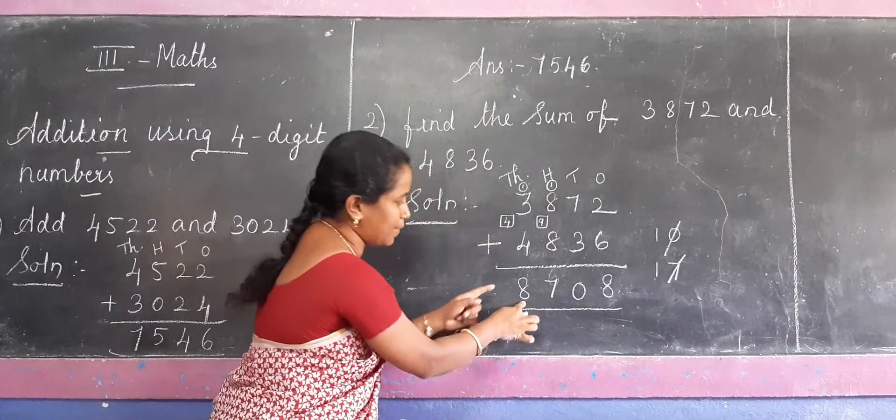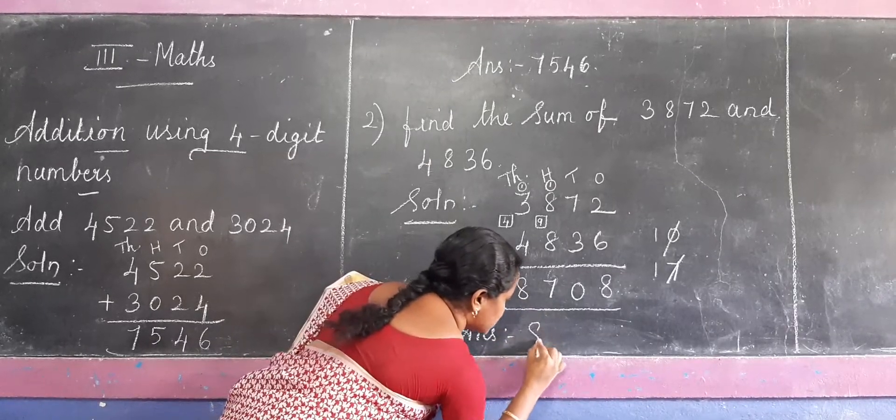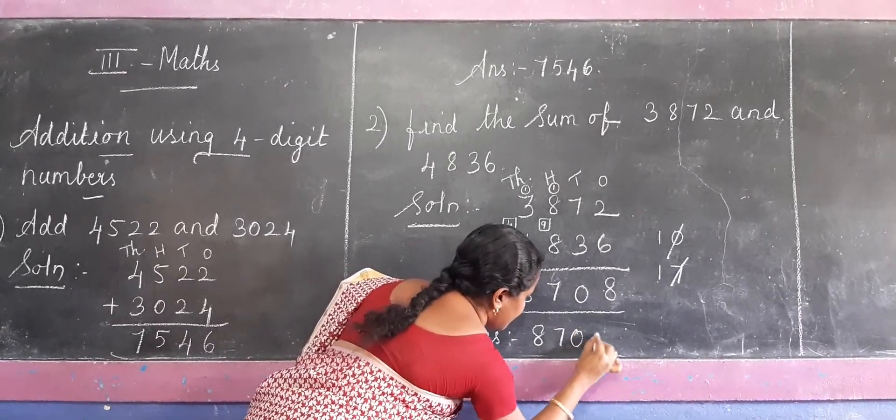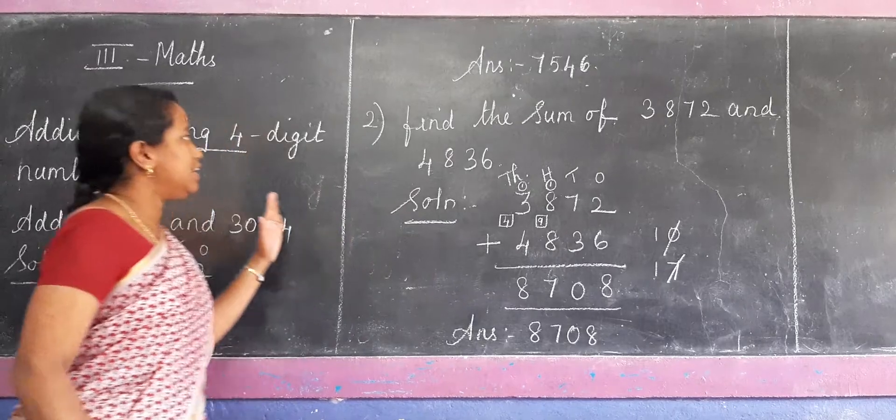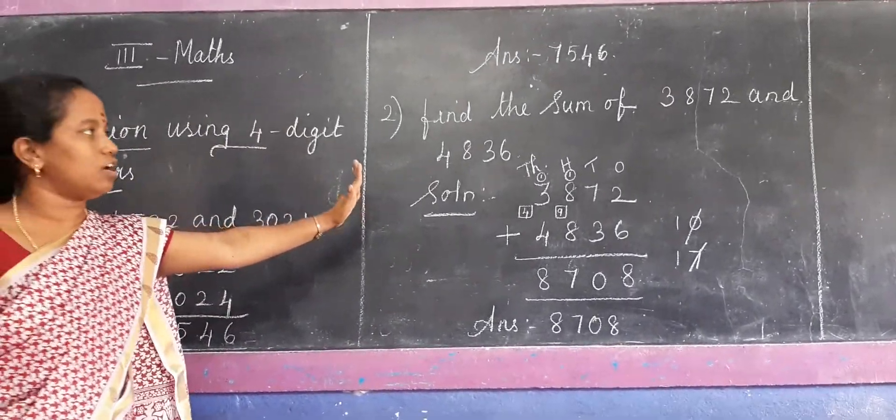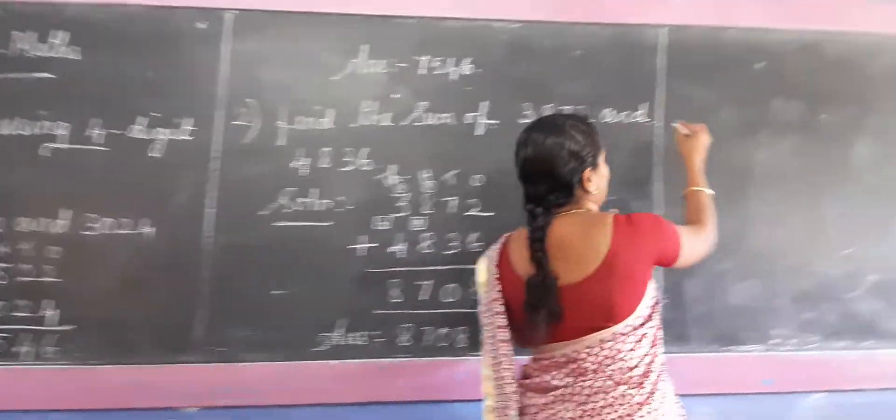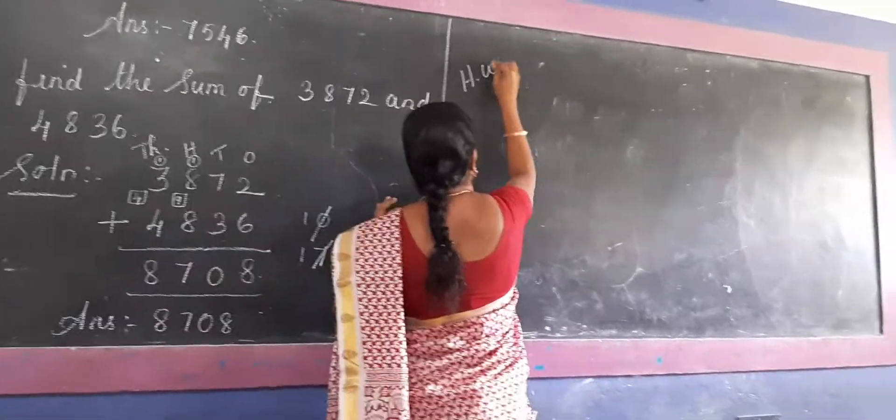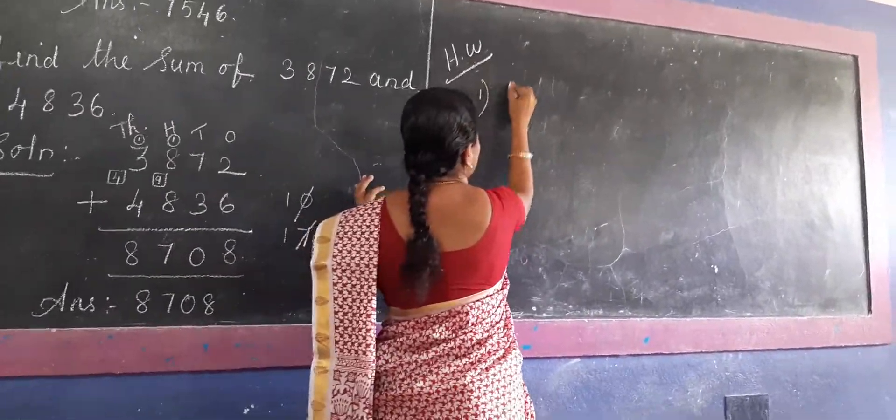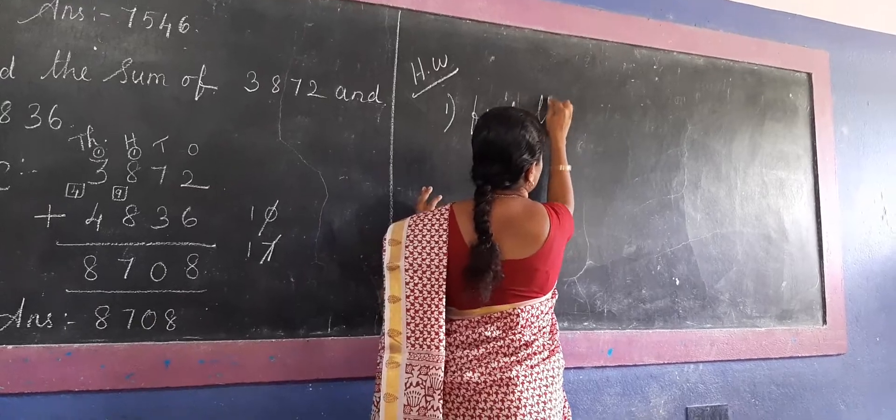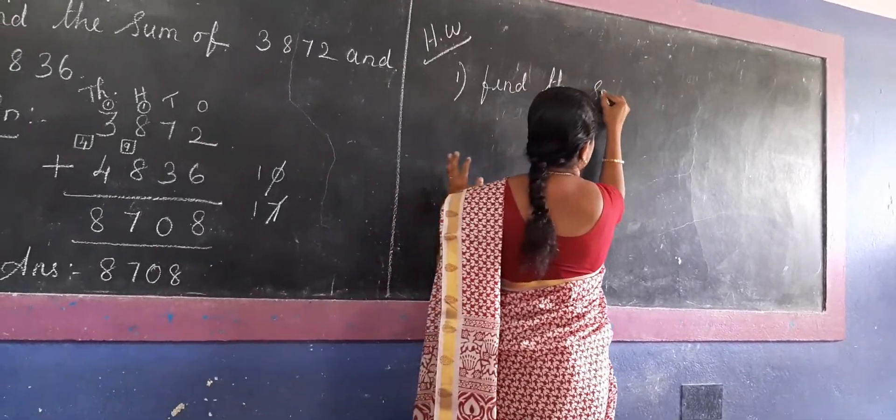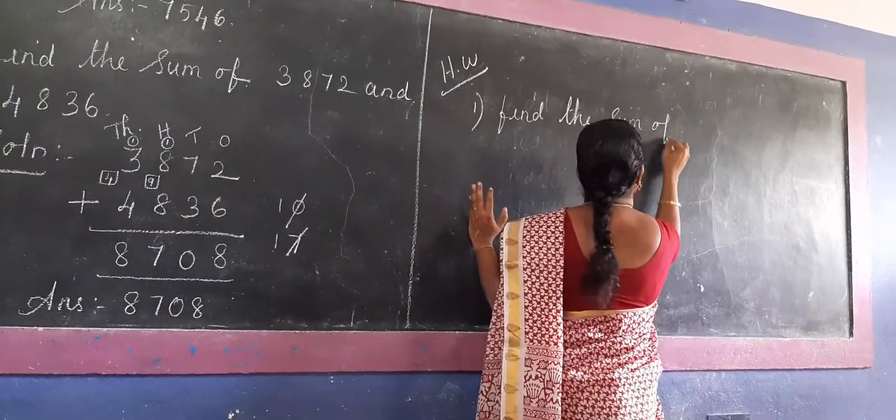So this is the answer. Place value, once, tens, hundred, thousand place value. 8708.